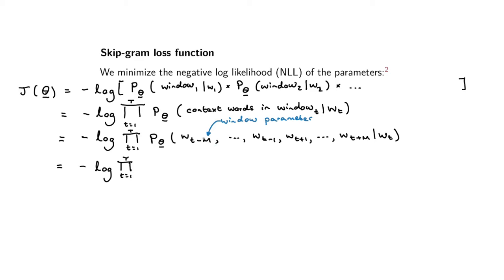We've got minus log, then the product from little t one up to big T, and now we end up with a product of t minus m given wt, t minus m plus one given wt, up to the probability of t plus m given wt. We can write that out using product notation again.